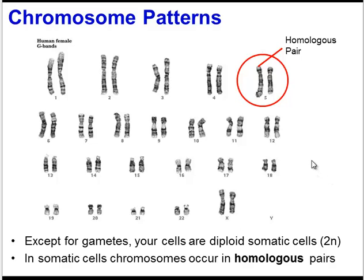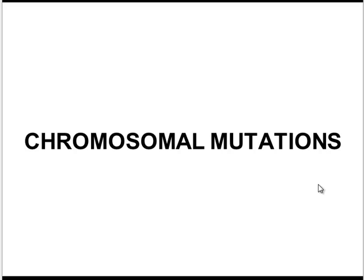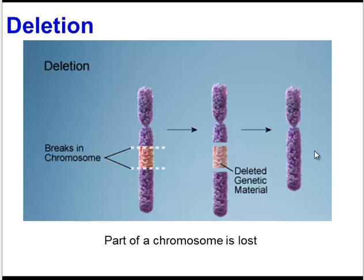This is going to help us understand some of the different mutations that we're going to look at in a moment. So let's start with chromosomal mutations. These are major changes in the structure of chromosomes. The first one is a deletion, which is exactly what it sounds like — part of a chromosome is lost, resulting in a chromosome with less genetic information.